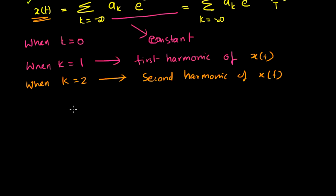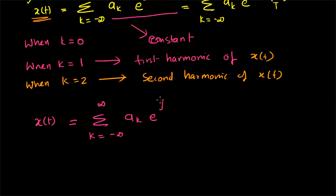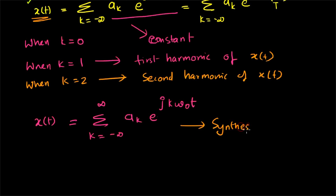This representation of the signal is known as the Fourier series representation in exponential form. Writing the equation again: x(t) = Σ(k=−∞ to +∞) ak·e^(jkω₀t). This is also known as the synthesis equation of the Continuous Time Fourier Series. In this video, we have derived an equation for the continuous time Fourier series.